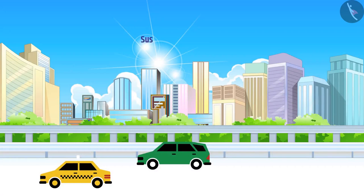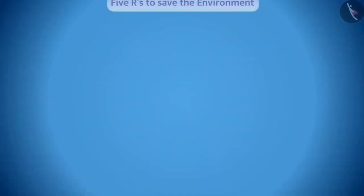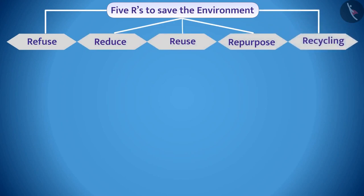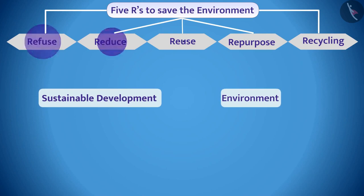The concept of sustainable development encourages the development and fulfillment of the present needs of human beings, while also ensuring that resources are conserved so that they are available for future generations. All of us should follow the five R's to ensure sustainable development and to save the environment.